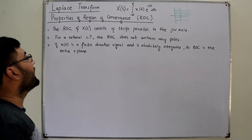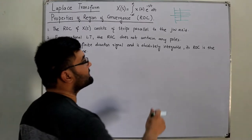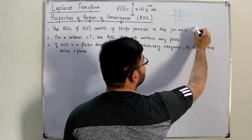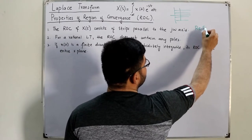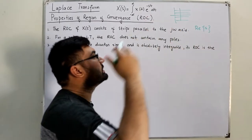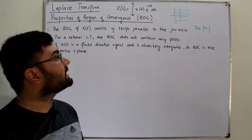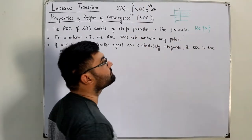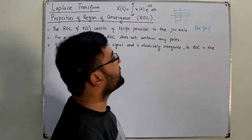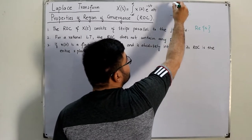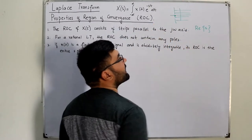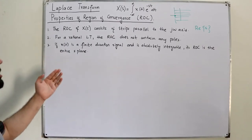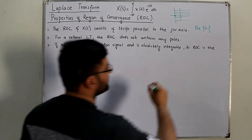This is property number one. Why is that? Because the region of convergence of the Laplace transform only depends on the real part of s — it does not depend on the jω axis. So for any particular value of the real part, the ROC is parallel to the jω axis. That is number one. Number two: for a rational Laplace transform, if you have a Laplace transform of the shape of numerator divided by denominator,